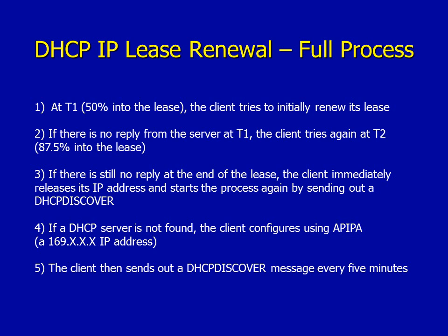At phase 3, if there's still no reply, at the end of the lease the client immediately releases its IP address and starts the process again by sending a DHCP Discover. It loses its IP address because it assumes it may be wrong or another client may have taken it. Stage 4, which happens simultaneously to stage 3: if it doesn't find a DHCP server, it configures using APIPA — the address range 169.254.x.x — and keeps this address, retrying with a DHCP Discover every five minutes.